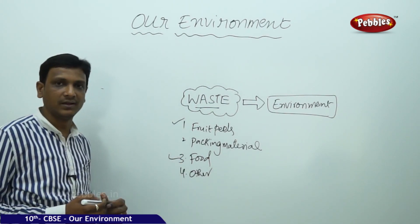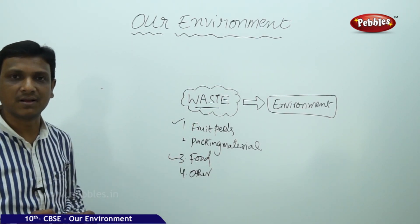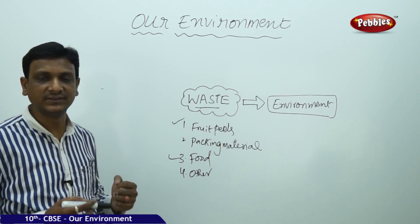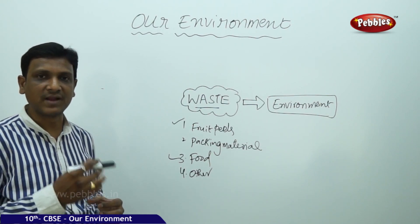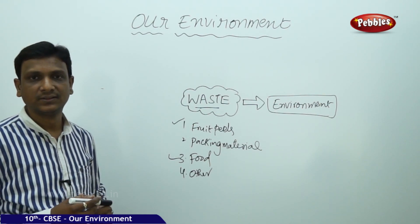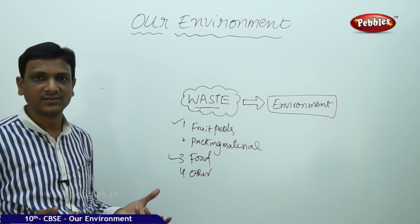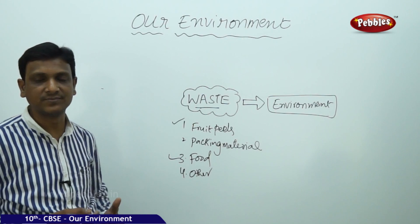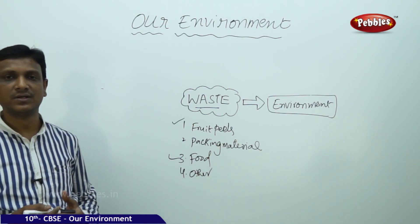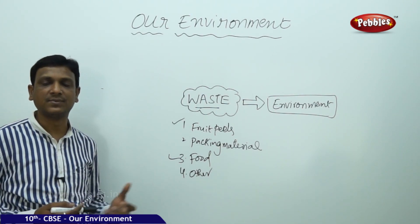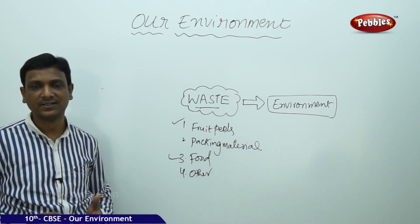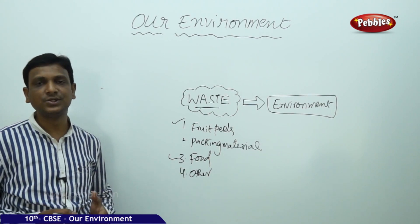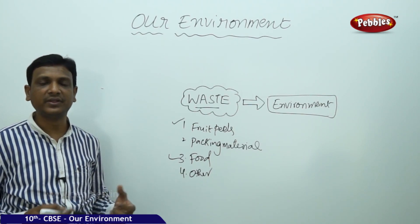For example, packing material — most packing material is comprised of plastic. We carry many things in plastic covers, and many items are wrapped in plastic. Plastic is unavoidable today, whether for packing or carrying food items like curry, curd, or milk — everything is packed in plastic. Even the wrappers of chips, biscuits, and chocolates — everything is wrapped in plastic.